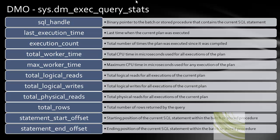DMO: sys.dm_exec_query_stats. This is undoubtedly my favorite DMO in SQL Server. This DMO provides you detail of all the queries run on SQL Server — how many times it was run, maximum time it has taken, on average time it has taken, how much logical reads or writes a query has done, and how many total rows a query has returned. This is the base DMO we will be using for our tuning exercise in this session.